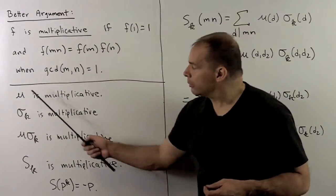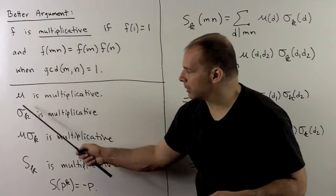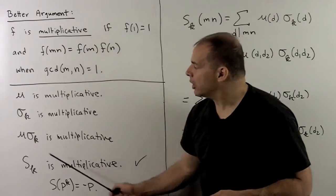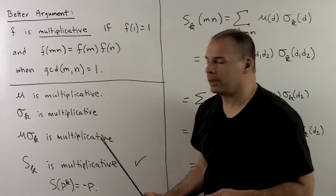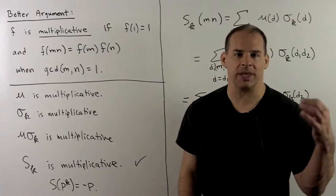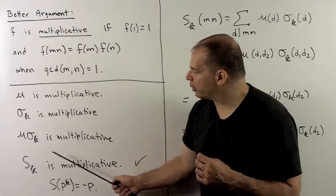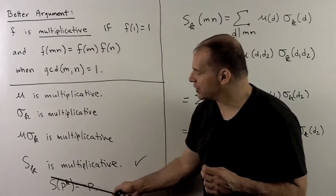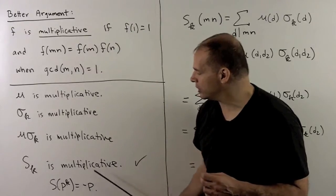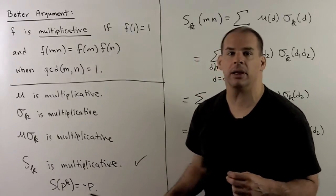Now note, mu is multiplicative. Sigma sub k is multiplicative. The product is multiplicative. We'll show in a second that each S sub k is multiplicative. So we get our formula on the previous board just by noting that if I take S on a power of a prime, we just get minus that prime. And then we build up.